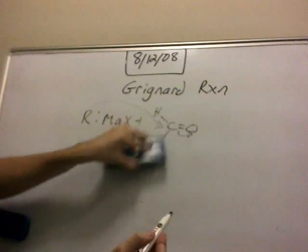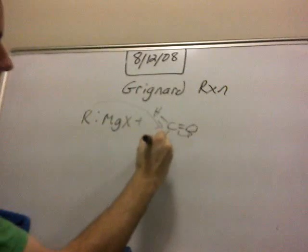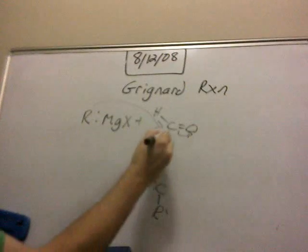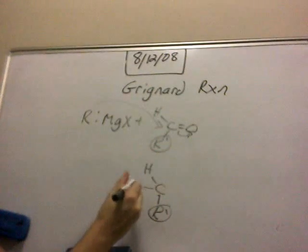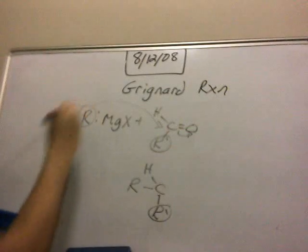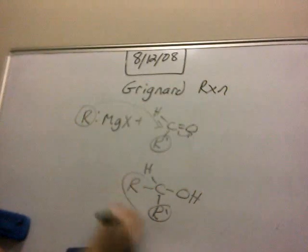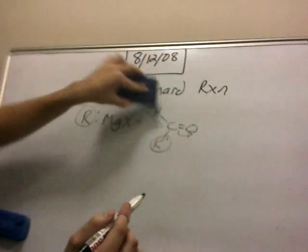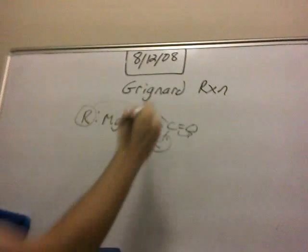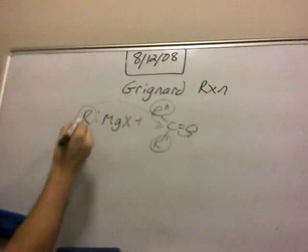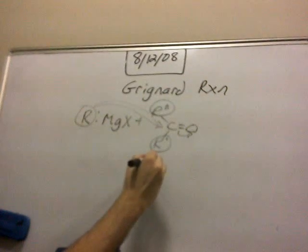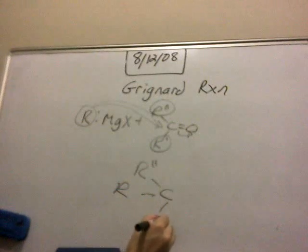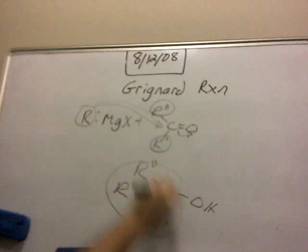If this was a higher level aldehyde, you would have this reaction along with the R prime species here, and this would be a second degree alcohol. As you can see with the ketone, the same situation would apply, and this species attaches here — so you have R double prime, C, R, R prime, and the hydroxyl group. This is the tertiary alcohol.